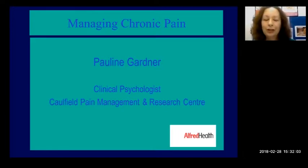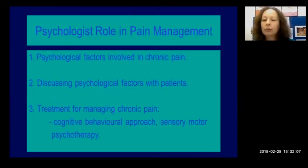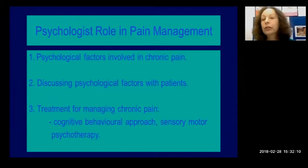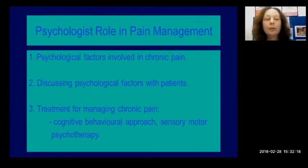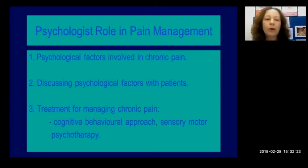Good afternoon everyone. I'm going to talk across three different areas. Carolyn has covered quite a lot already, which is really good — it sets the stage. The three areas we'll cover are: the psychological factors involved in persistent or chronic pain; what happens when a patient comes through to see a psychologist and what you need to think about when referring someone; and the treatments that have developed over time for chronic pain.